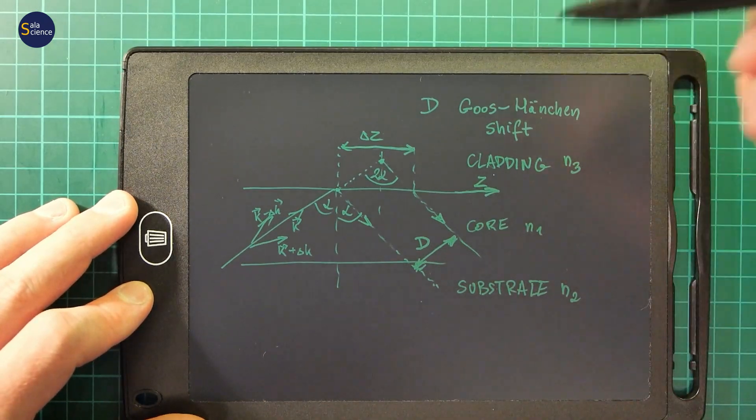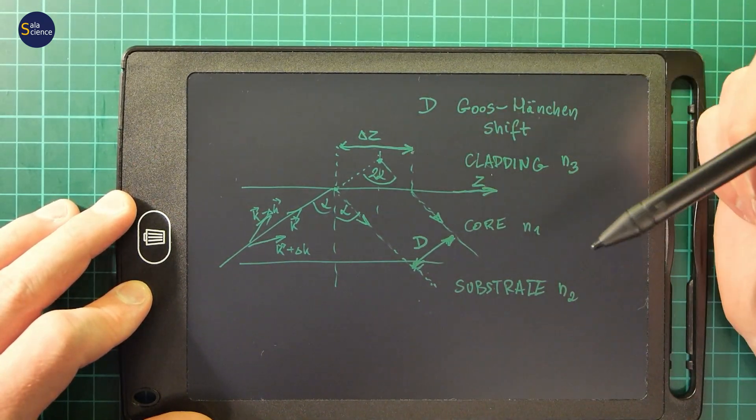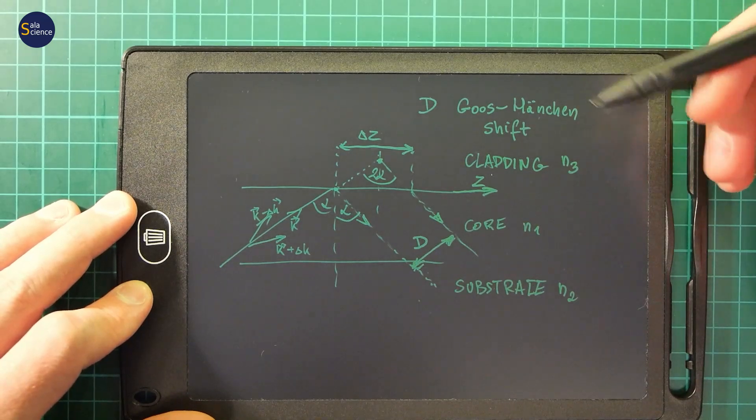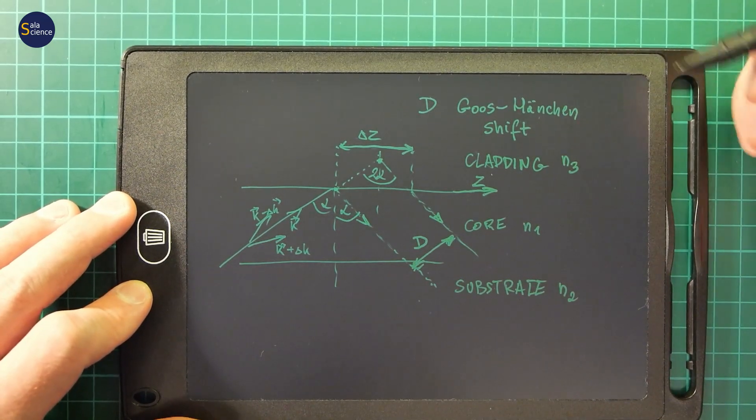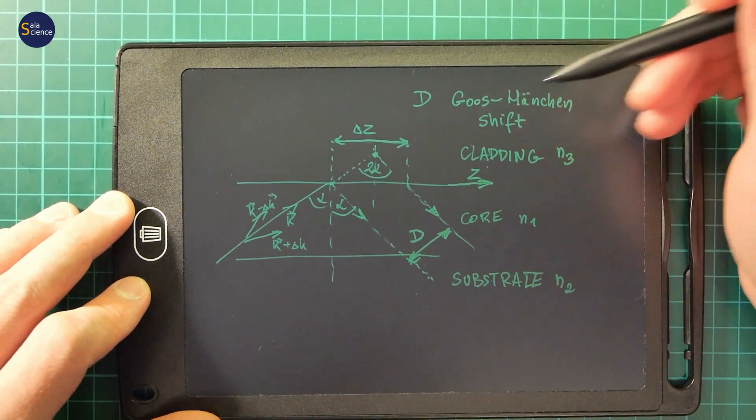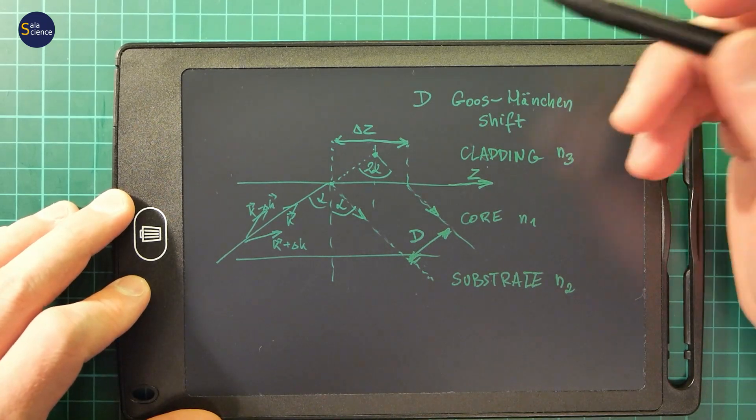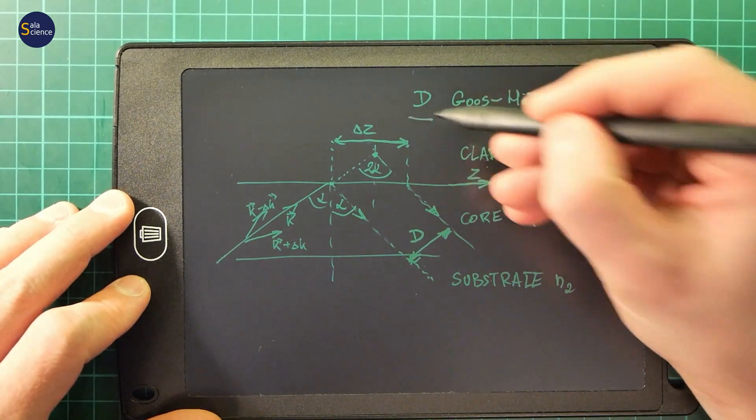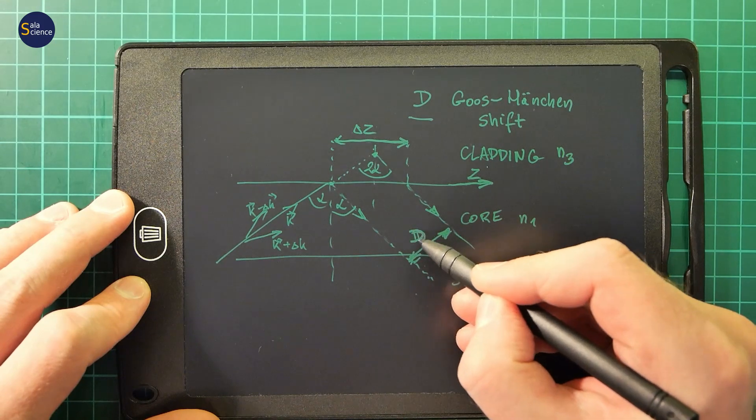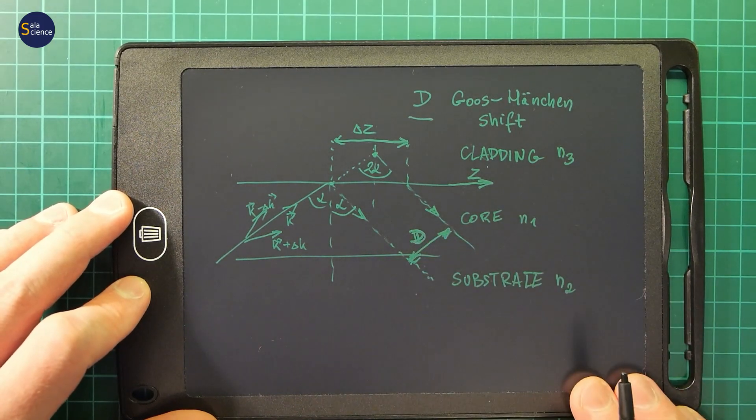Sometimes in some textbooks, this delta z parameter is also called a Goos-Hänchen shift. But historically, in the article of Goos and Hänchen, this D value is called this shift.